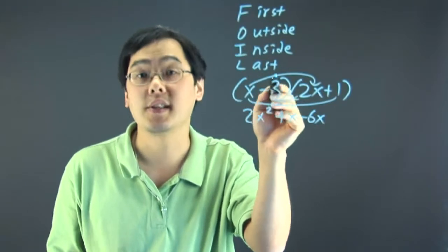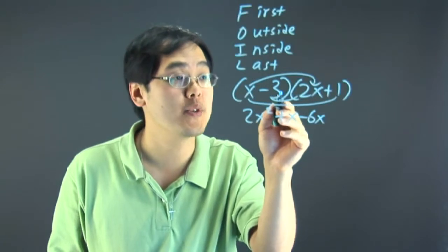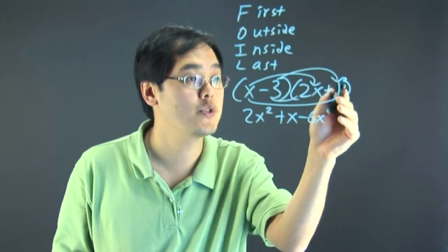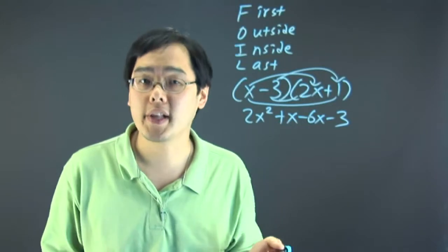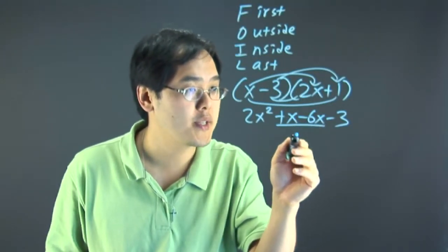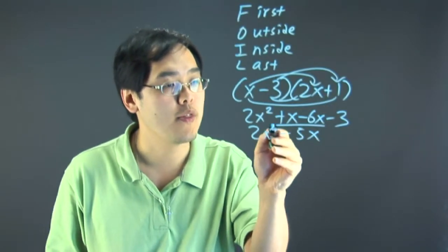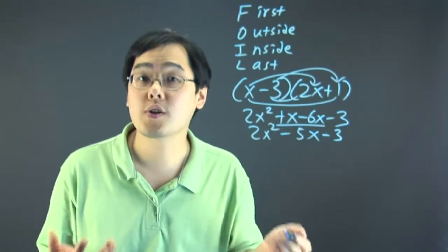And then last, literally the last terms in each parentheses. So that means minus 3 and the positive 1. You're going to multiply those two and you have negative 3. You're going to combine the like terms from there. The like terms are plus x minus 6x, which is negative 5x. And you're going to leave the other two terms the way they are. Another quick example for you.